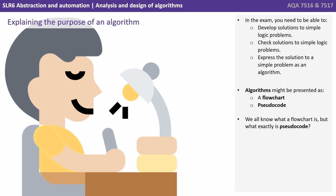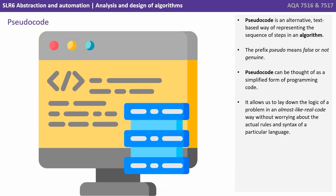Algorithms can be presented in a number of ways. Two of the most common are flowcharts and pseudocode. Now we all know what a flowchart is, but what exactly is pseudocode? Well pseudocode is simply an alternative, a text-based way of representing the sequence of steps in an algorithm.